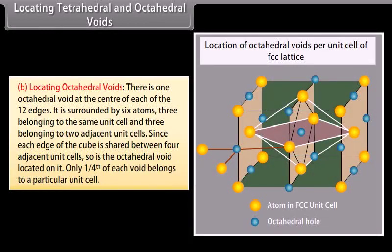There is one octahedral void at the center of each of the 12 edges, surrounded by six atoms — three belonging to the same unit cell and three belonging to two adjacent unit cells. Since each edge of the cube is shared between four adjacent unit cells, only one-fourth of each void belongs to a particular unit cell.